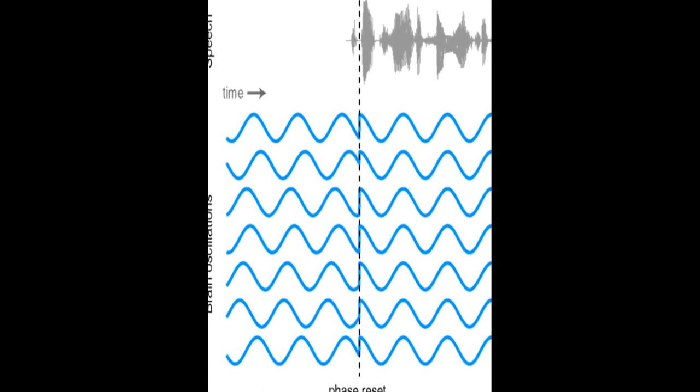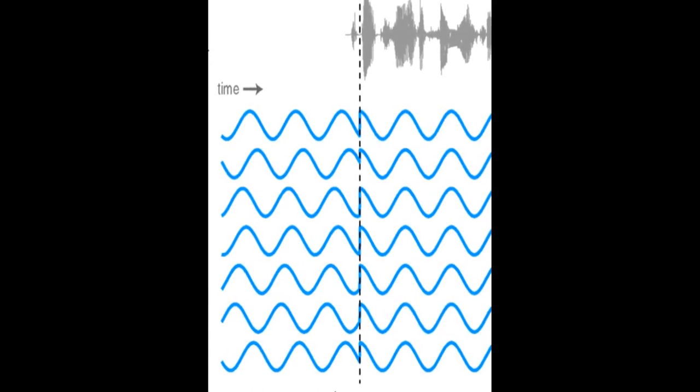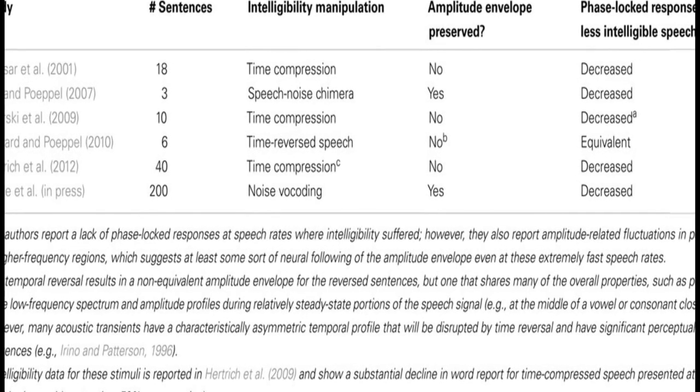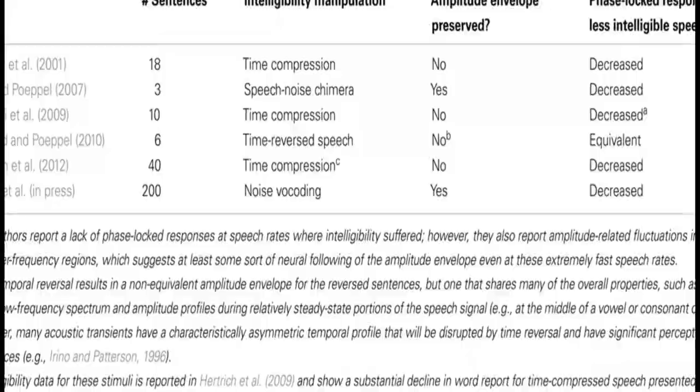The article discusses the importance of speech rhythm and how it is conveyed through amplitude modulations in the slow rhythmic information contained in speech. It explains that listeners rely on this information to understand place and manner of articulation, segmental information, and speech rate.